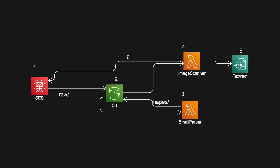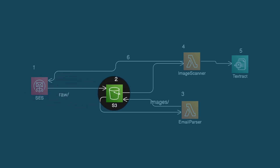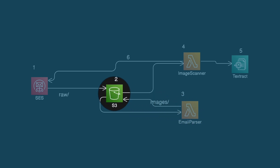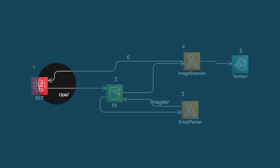Here's the basic architecture: first, SES receives the incoming email and an action drops it into an S3 bucket in a raw prefix. An EventBridge rule picks up those changes and triggers a Lambda function called the email parser, which reads the email, parses the metadata, extracts the from address and attachments, and writes image attachments back to the bucket in an images prefix. The image scanner is notified by another EventBridge rule, Textract does its OCR magic synchronously, and finally the image scanner sends an email via SES back to the original sender with the extracted text.